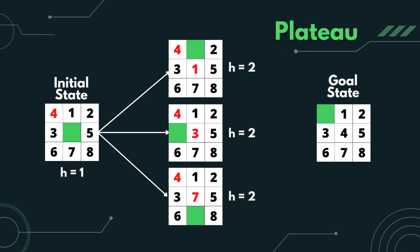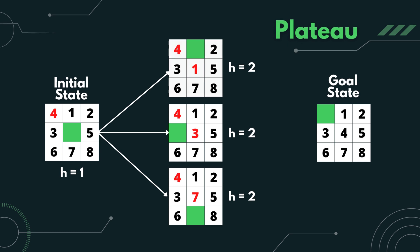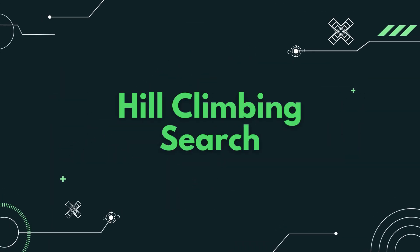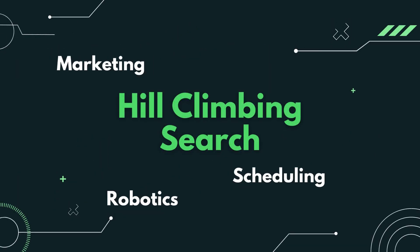Let's look at this example. All the moves that can be made will increase H from 1 to 2. And since all moves give the same heuristic value, which move should the algorithm choose? This is how plateau can cause problems in a hill-climbing search. Although with drawbacks, hill-climbing is still a very resourceful search technique, especially in solving huge problems. In a real-life setting, it is very useful in areas such as marketing, scheduling, as well as robotics.